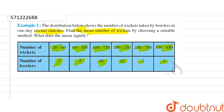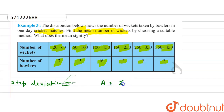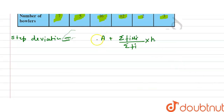We will use the step deviation method. The formula for the step deviation method is: mean = assumed mean + (summation of fi×ui divided by sigma of fi) multiplied by h. Here, 'a' is the assumed mean.